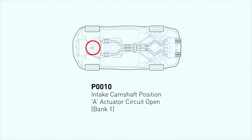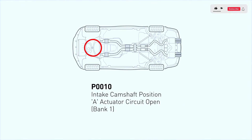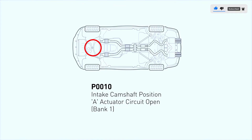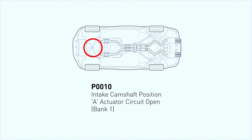The generic code P0010 is defined as a camshaft position actuator circuit bank 1. This error code tells you that the powertrain control module (PCM) or engine control module (ECM) has detected a problem with your engine's variable valve timing VVT solenoid.